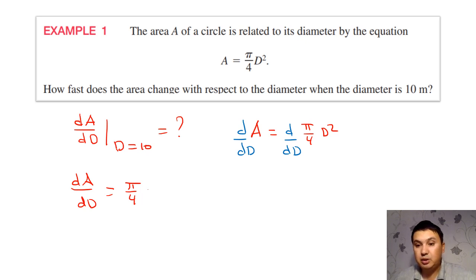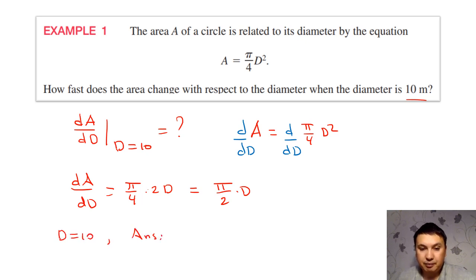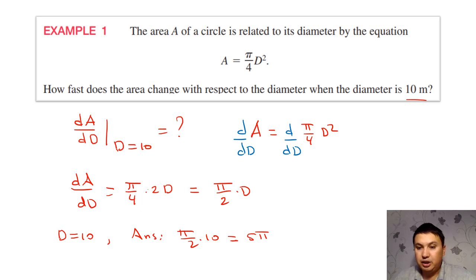We would like to take the derivative of D squared with respect to D. This is like taking the derivative of x squared with respect to x, which by the power rule gives 2x. Hence here we get 2 times D, which means we get π over 2 times D. Now substituting D equal to 10, the answer is π over 2 times 10, which is 5π. So when diameter equals 10, the rate of change of the area is 5π.